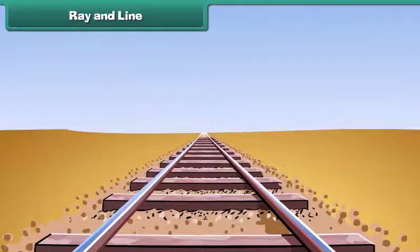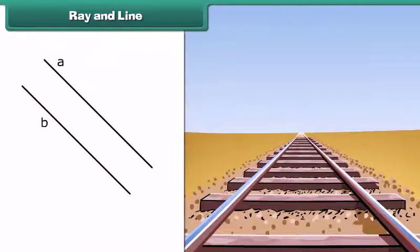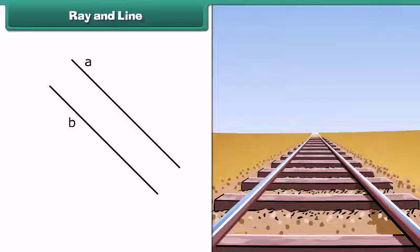Now notice this railway track. The two sides of track do not cross one another. These sides are parallel. Similarly, two lines are said to be parallel lines if no matter how far the lines extend in either direction, they never cross each another.